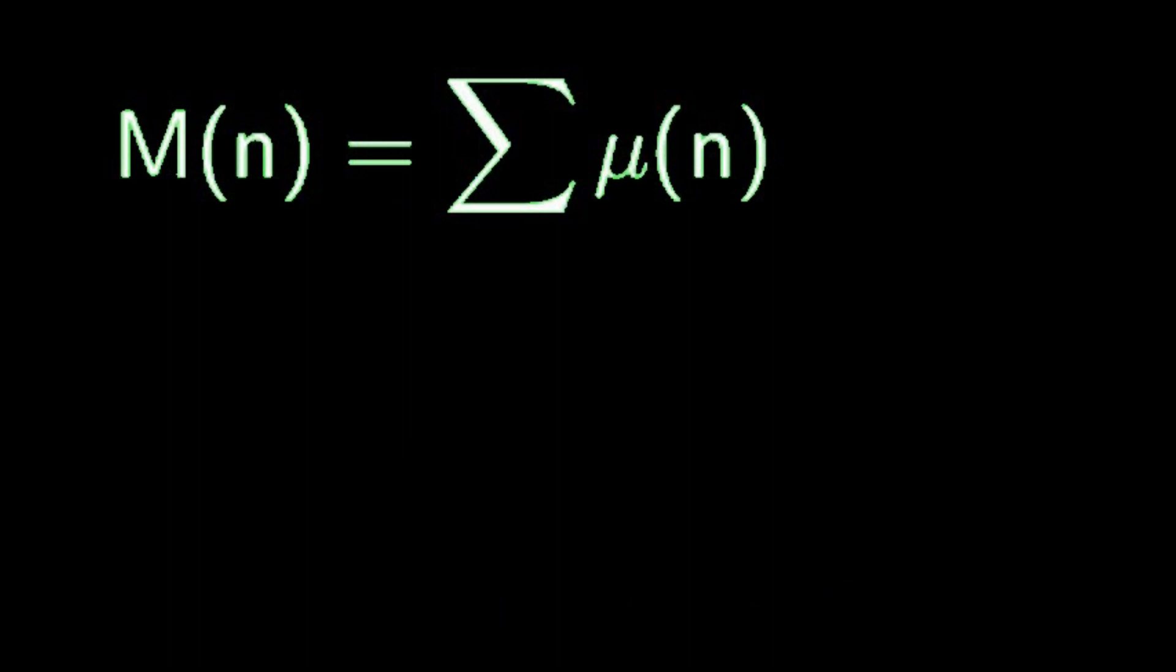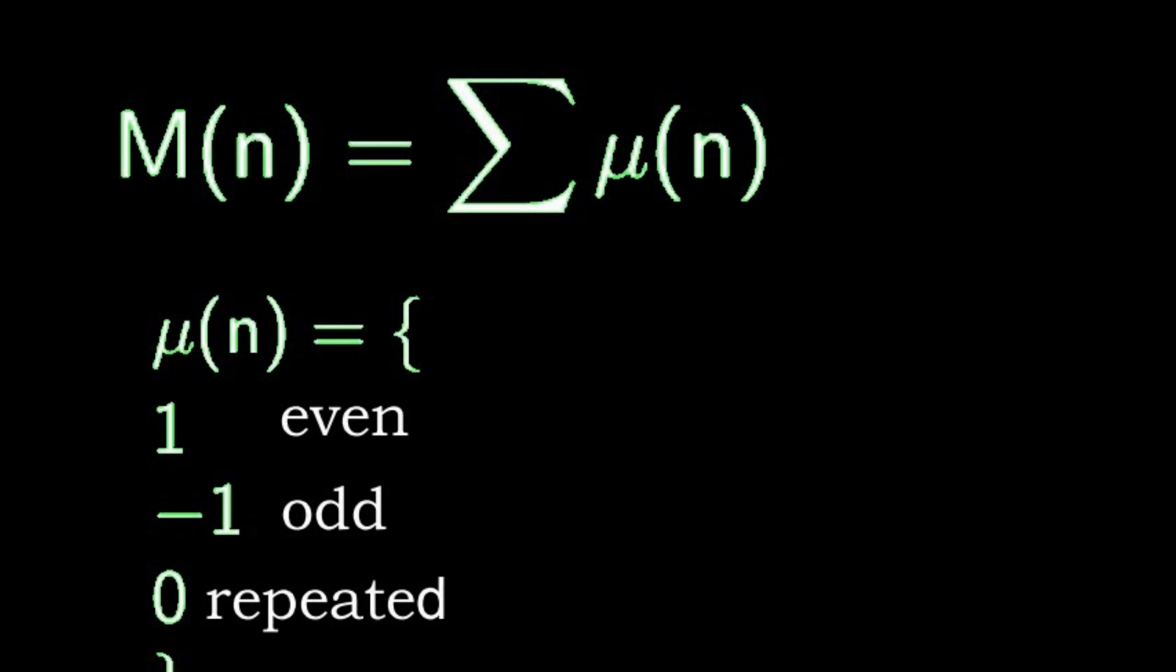The Mertens function is usually written as the sum of another function called the Mobius function. The Mobius function is defined in a similar way. It is 1 if there is an even number of prime factors and negative 1 if there are an odd number of prime factors and 0 if it has repeated prime factors. So the Mertens function is just a sum over the Mobius function.